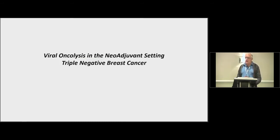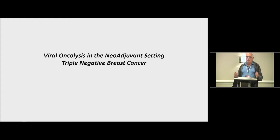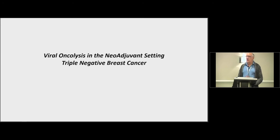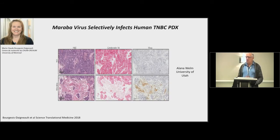I want to think about how to use these viruses best. We're always forced to treat patients who are extremely advanced, and sometimes those patients are very immune suppressed with a huge tumor burden. Would it not be better to move this kind of therapy up front, to a neoadjuvant stage where it has a better chance to work because tumors are smaller and patients are healthier? We looked at this concept in the neoadjuvant setting for triple negative breast cancer in a mouse model. This concept was developed by postdoc Mary-Claude Bougier-Daneau, now at the University of Montreal. She first tested whether triple negative breast cancer is susceptible to virus infection.